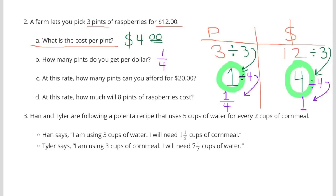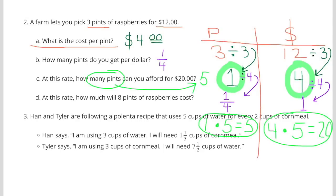C. At this rate, how many pints can you afford for $20? So if you multiply the 4 times 5 to make $20, then you'd have to multiply the 1 pint times 5 to make 5 pints. So for $20, you could afford 5 pints of raspberries.